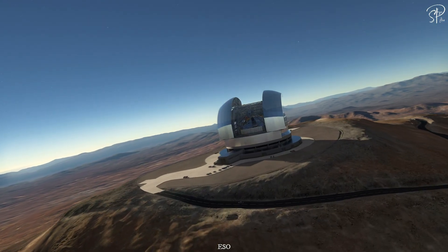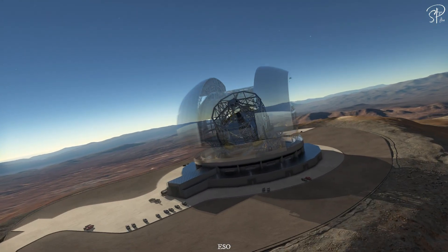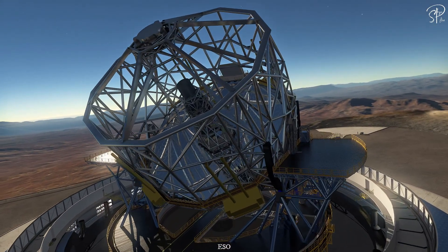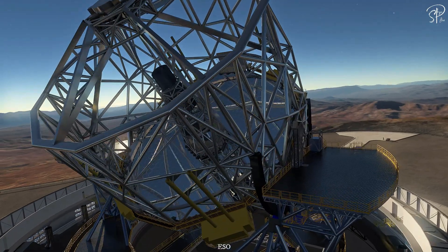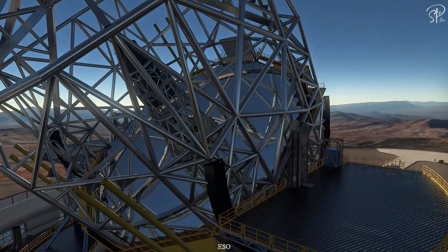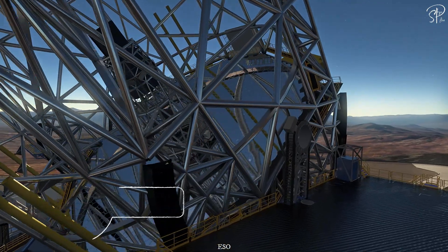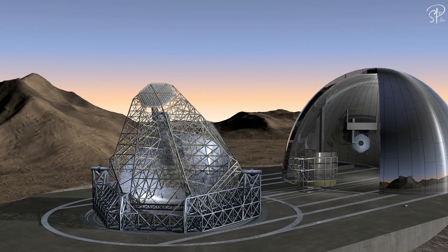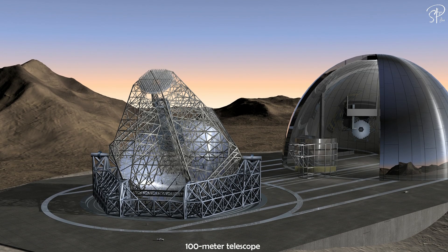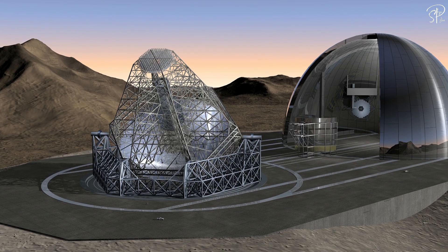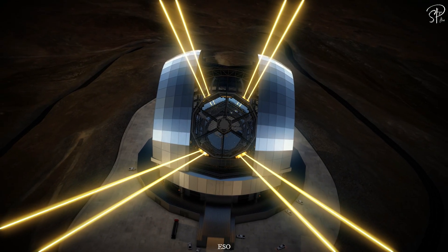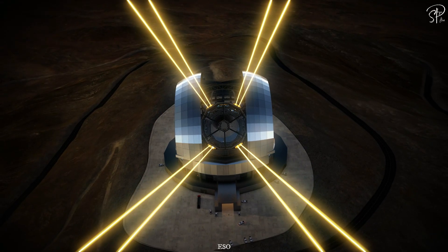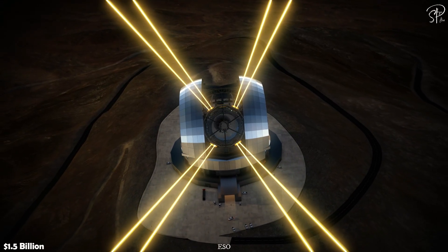This telescope is a part of the European Southern Observatory but it is being constructed at Atacama Desert, Chile. This telescope is a simpler version of the overwhelmingly large telescope. The overwhelmingly large telescope would have been a 100 meter telescope and too complex to build while the EELT would be a 39.3 meter telescope and much practical to build.